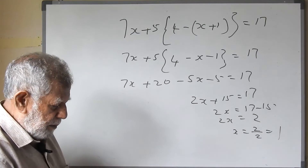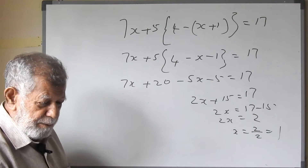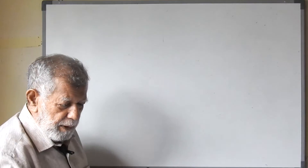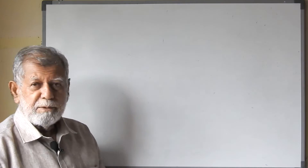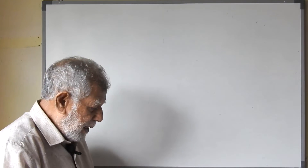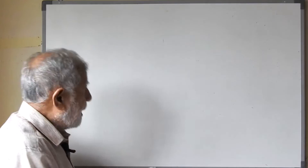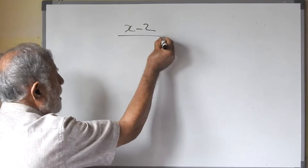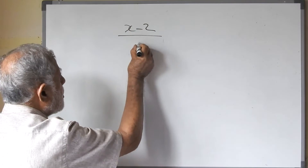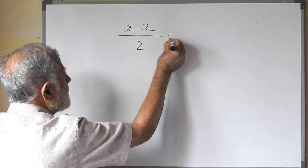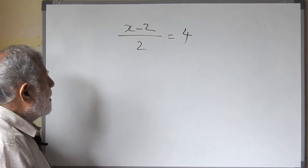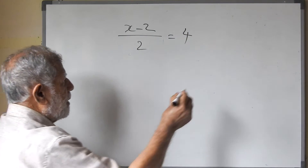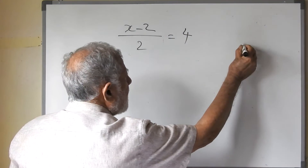Now we have done this before — I hope you understand it fully. We should do some more exercises on simple equations. I will take a few more examples. Look at this one: x minus 2 upon 2 equals 4. Now this is a fraction.